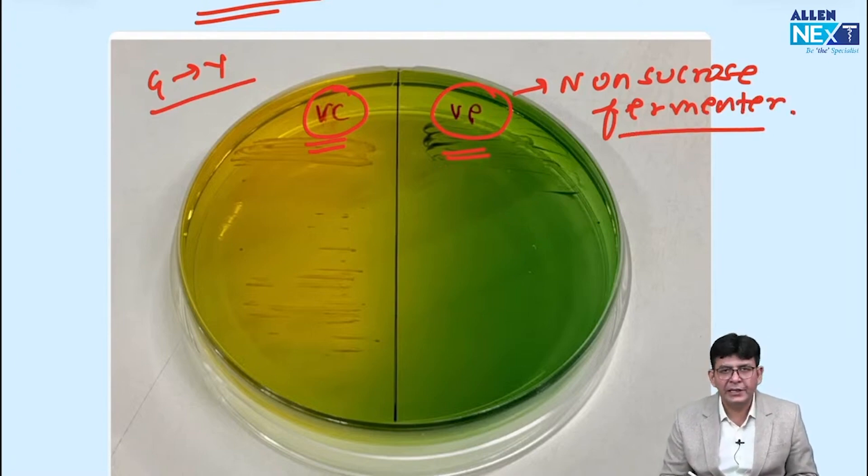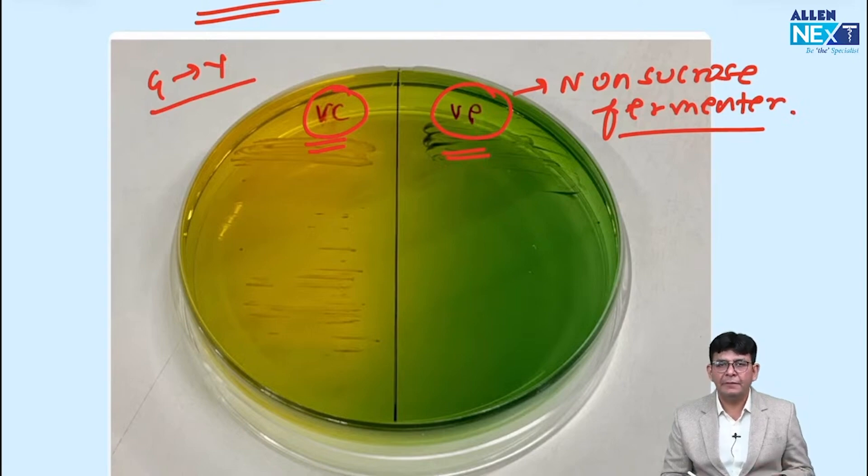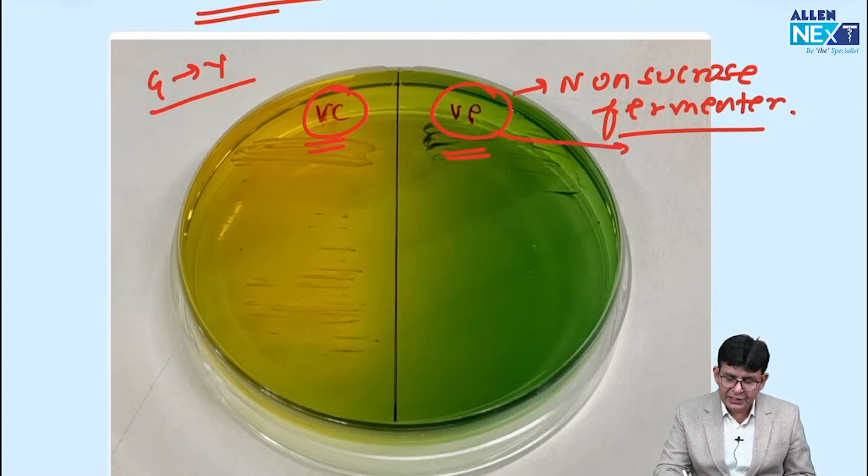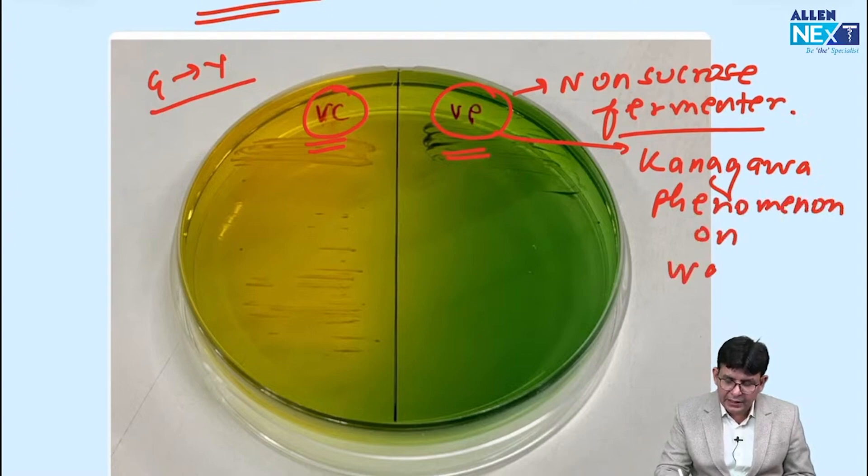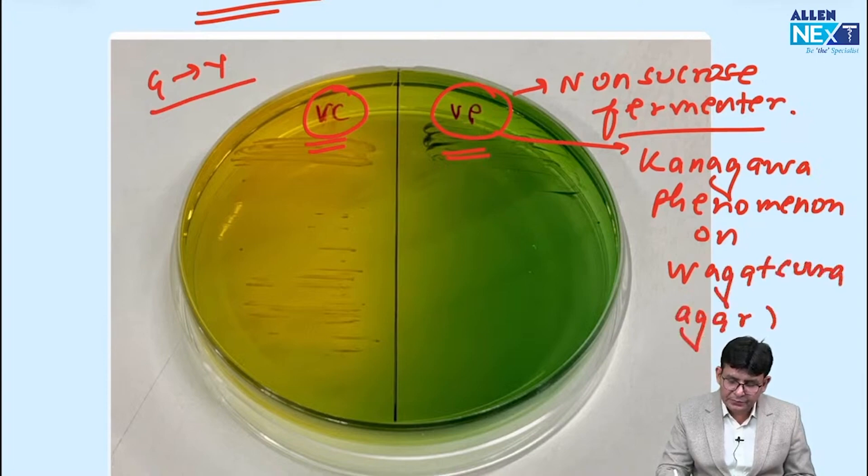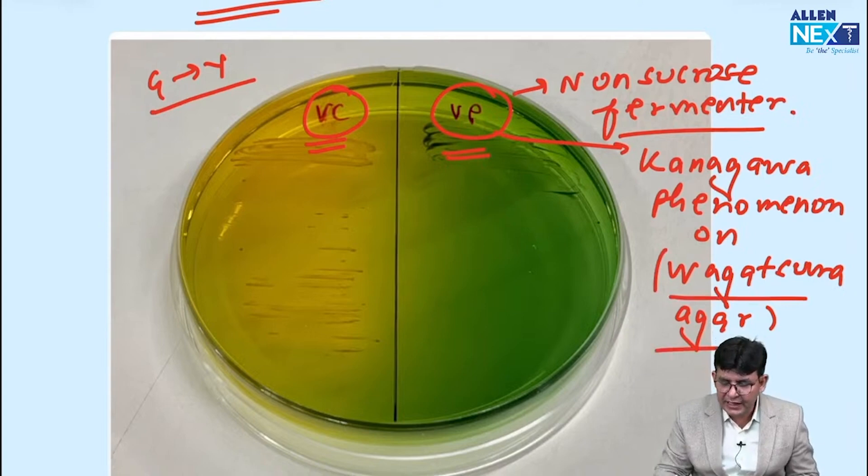This is also needs to know. Vibrio parahemolyticus associates with Kanagawa phenomena. It was asked in the recent NBE exam, that Vibrio parahemolyticus associates with which phenomena? This associates with Kanagawa phenomena. And this Kanagawa phenomenon is being observed on which particular agar? Wagatsuma agar. And what is Wagatsuma agar? It is a high salt content agar on which this particular one shows enhanced beta hemolysis.